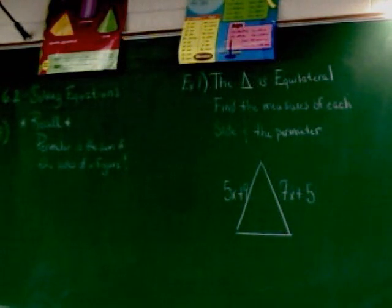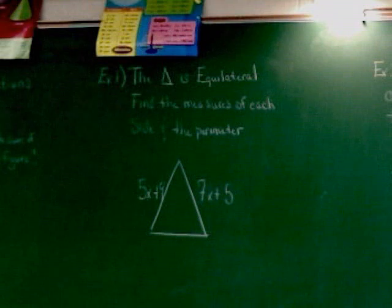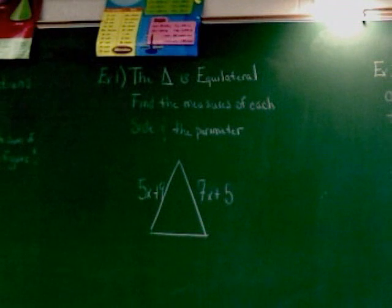Let's take a look at example one. Example one says that the triangle is equilateral and that we're to find the measures of each side and the perimeter. Equilateral is something you should know, but equilateral simply means that all three sides have the exact same length.